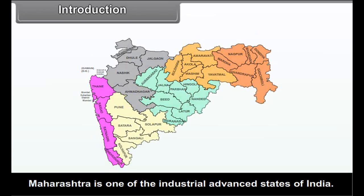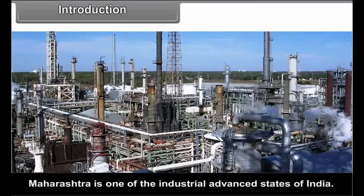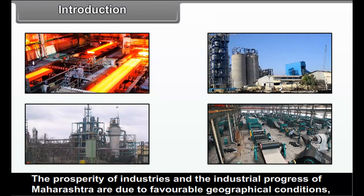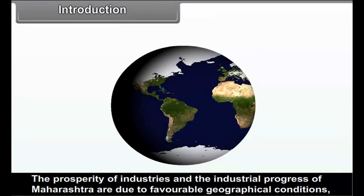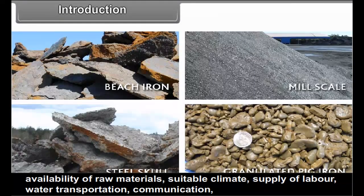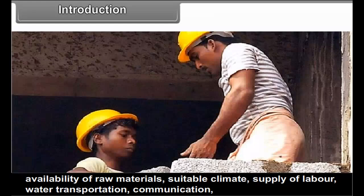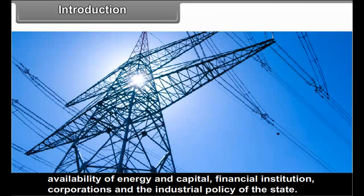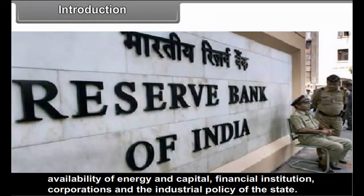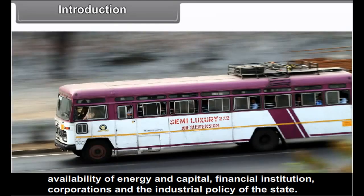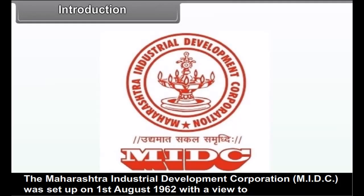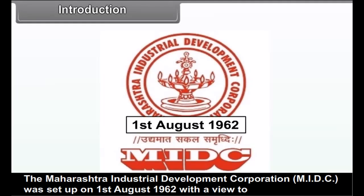Maharashtra is one of the industrially advanced states of India. The prosperity of industries and the industrial progress of Maharashtra are due to favourable geographical conditions, availability of raw materials, suitable climate, supply of labour, water, transportation, communication, availability of energy and capital, financial institutions, corporations and the industrial policy of the state. The Maharashtra Industrial Development Corporation was set up on 1st August 1962.